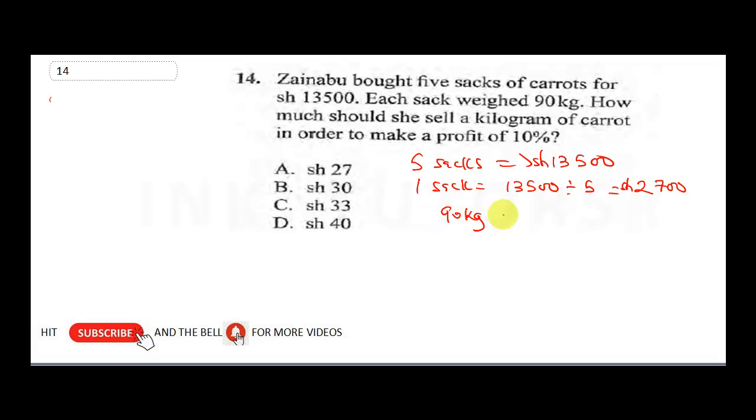So that means 90 kg, which is each sack, actually cost us 2,700 shillings. So what will 1 kg cost, because the question says how much should she sell a kilogram. So this is going to be 2,700 divided by 90, which will give us 30 shillings. So her real cost price is actually 30 shillings.